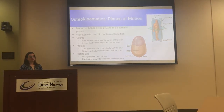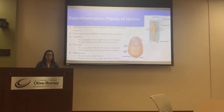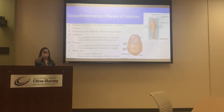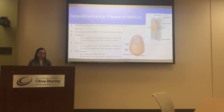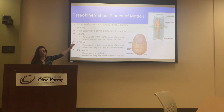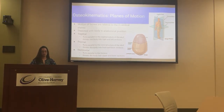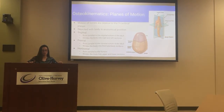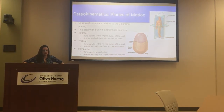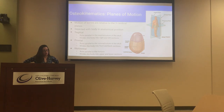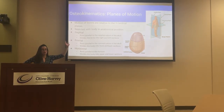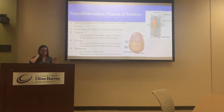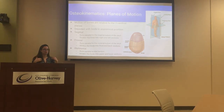We also have different planes of motion — the big word for this is osteokinematics. It breaks down to three cardinal planes: the sagittal plane, which is if we drew a line directly through us front to back; the coronal plane, which is if we cut our body in half side to side; and the transverse plane, which is if we were to cut ourselves in half at the waist. We'll get into this a lot more with the lab — it almost makes more sense actually doing it.